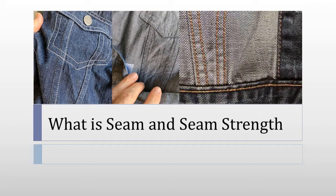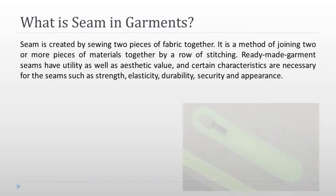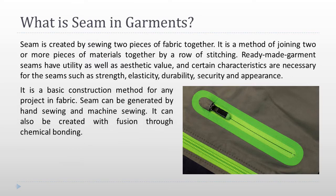What is seam and seam strength? Seam strength factors and its causes of failure. What is seam in garments? A seam is created by sewing two pieces of fabric together. It is a method of joining two or more pieces of materials together by a row of stitching. Readymade garment seams have utility as well as aesthetic value, and certain characteristics are necessary for the seam such as strength, elasticity, durability, security, and appearance.